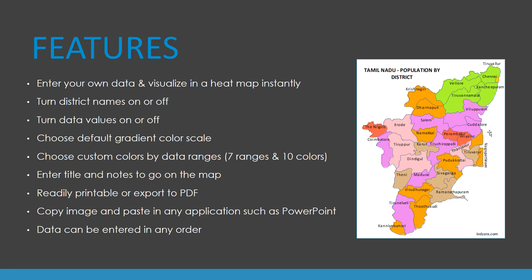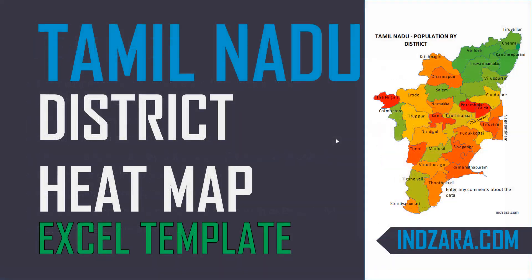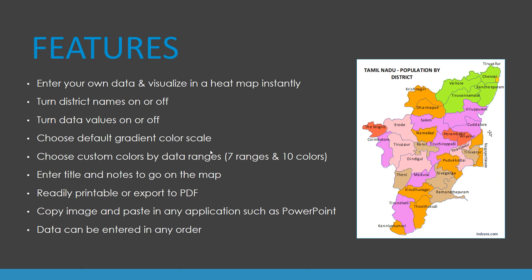Let's talk quickly about the features of the template. You can enter your own data at the district level and visualize it in a heatmap instantly. You can turn the district names on or off on the map, and you can turn the data values on or off. You can choose a gradient color scale or a custom color range with up to seven different data ranges and 10 colors to choose from. You can enter a title and a comment on the map, easily print or export to PDF, copy and paste the image into applications such as PowerPoint or Word, and enter data for districts in any order — the only requirement is that district names match those expected in the template.